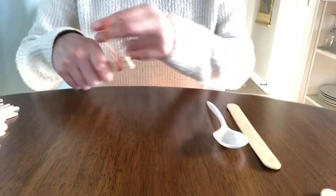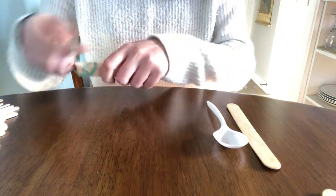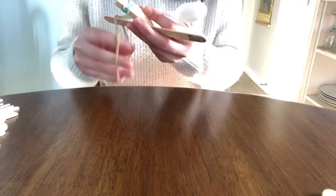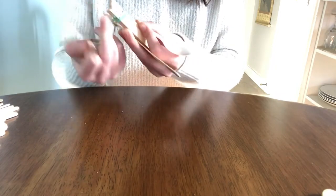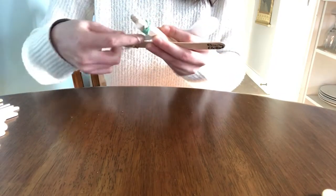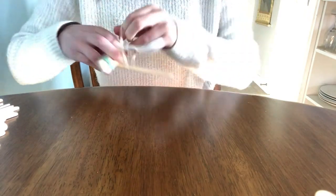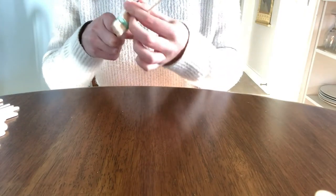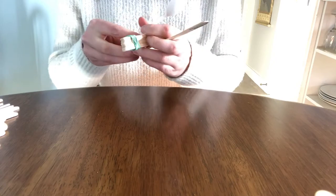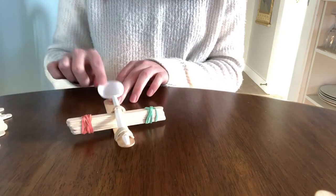For my second catapult I'm using a spoon instead of the top popsicle stick. I'm going to be testing which catapult shoots further, the one made with the spoon or the one made with the popsicle stick. There are many other ways to make a catapult so definitely get creative and build whatever you want. Just make sure that you have two different catapults so you can test which one launches a gummy bear further.